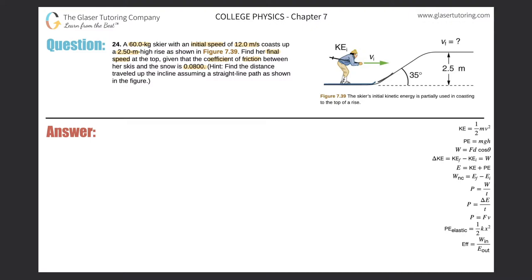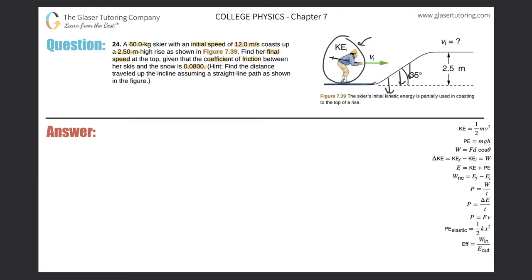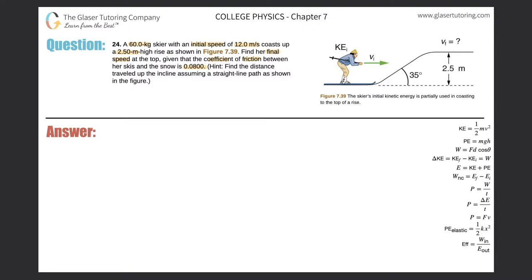As she travels up the slope, she is experiencing friction. Friction is a non-conservative force — it removes mechanical energy from the system. So instead of all the energy being purely converted to potential and kinetic at the top, some kinetic energy is lost due to friction. The total energy at the end will be less than the total energy at the beginning.